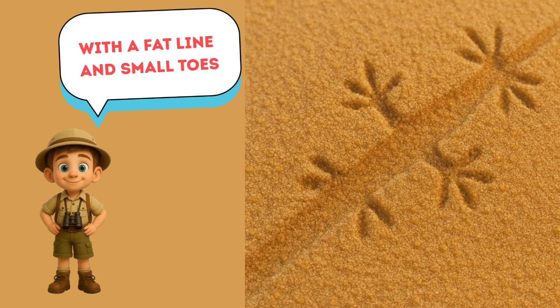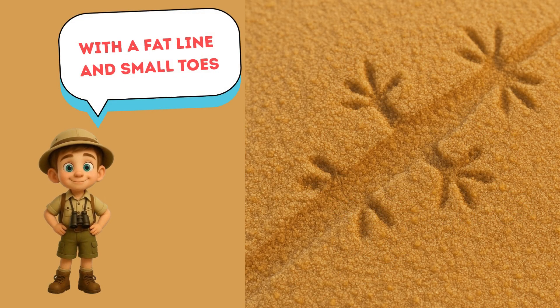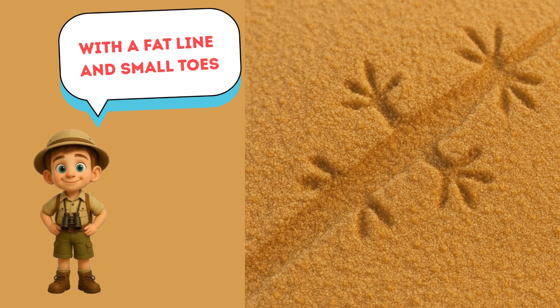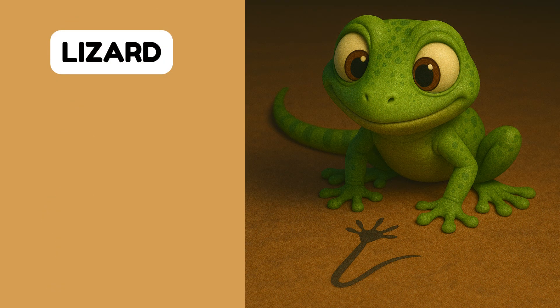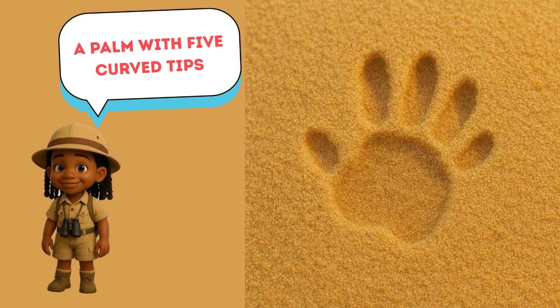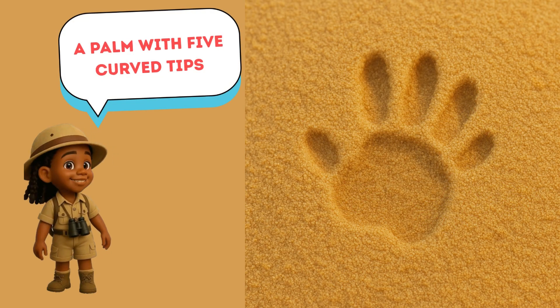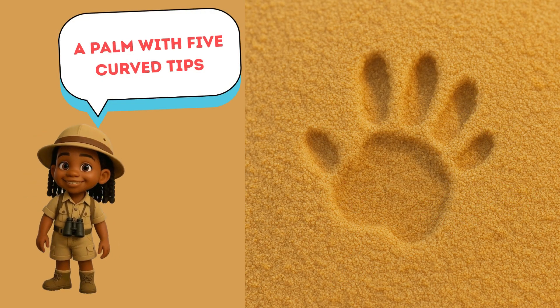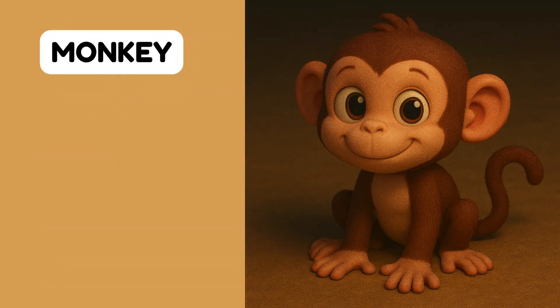Whose footprints are those? With a flat line and small toes — that's a lizard track. Whose footprints are those? A palm with five curved tips — that's a monkey track.